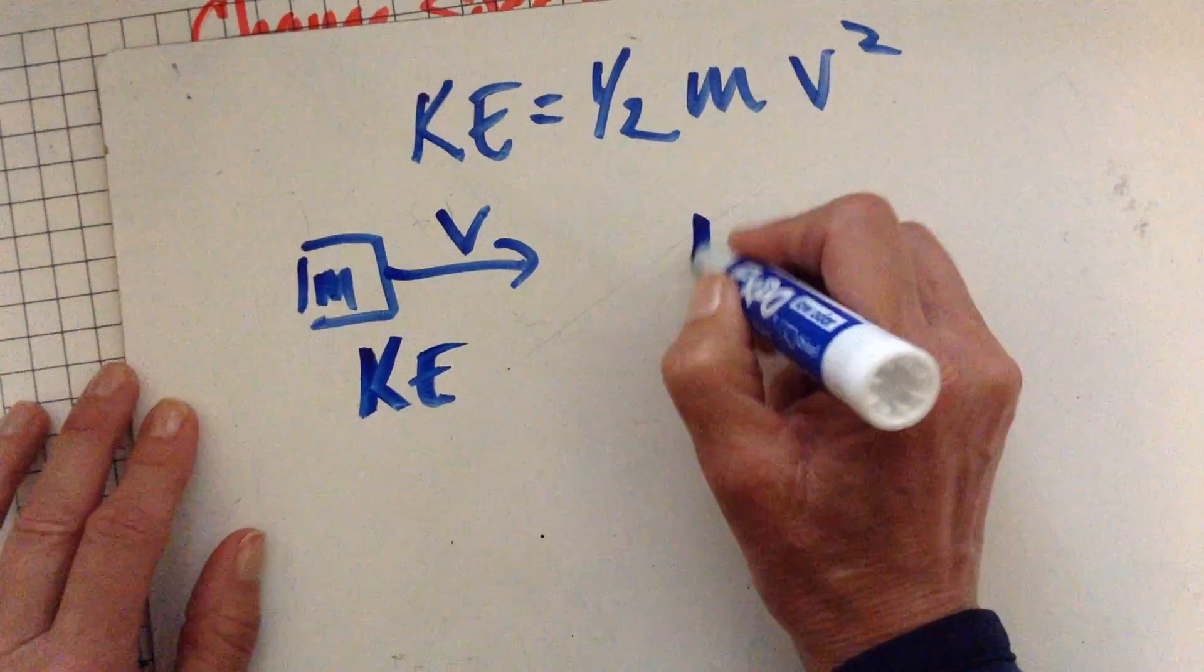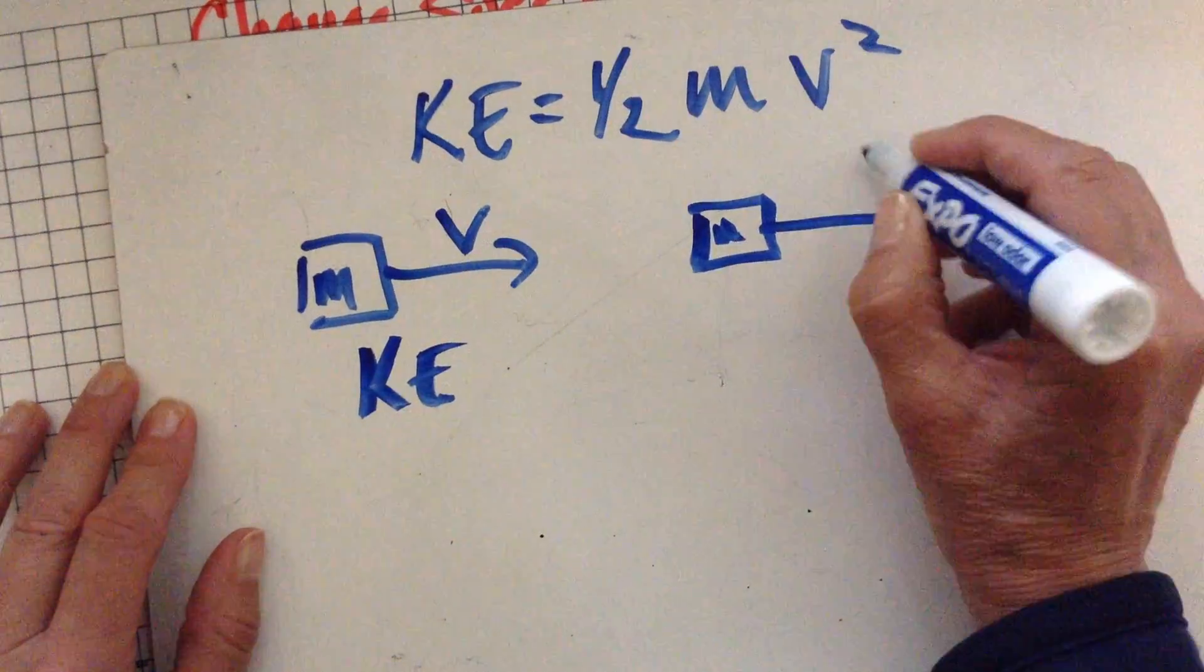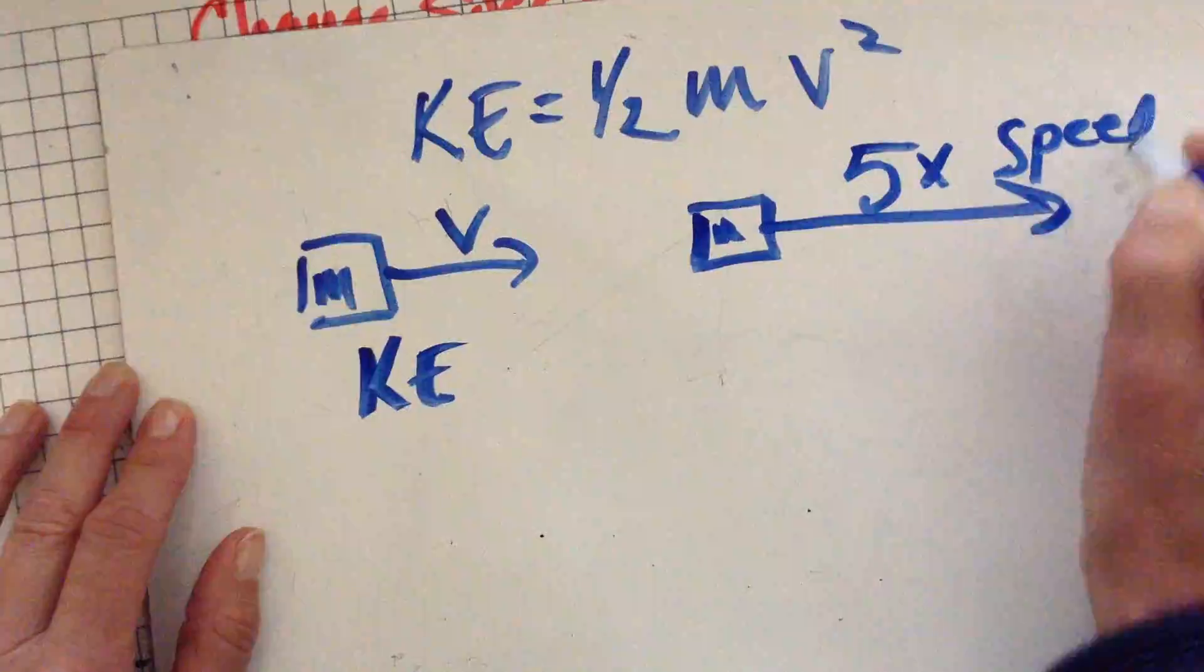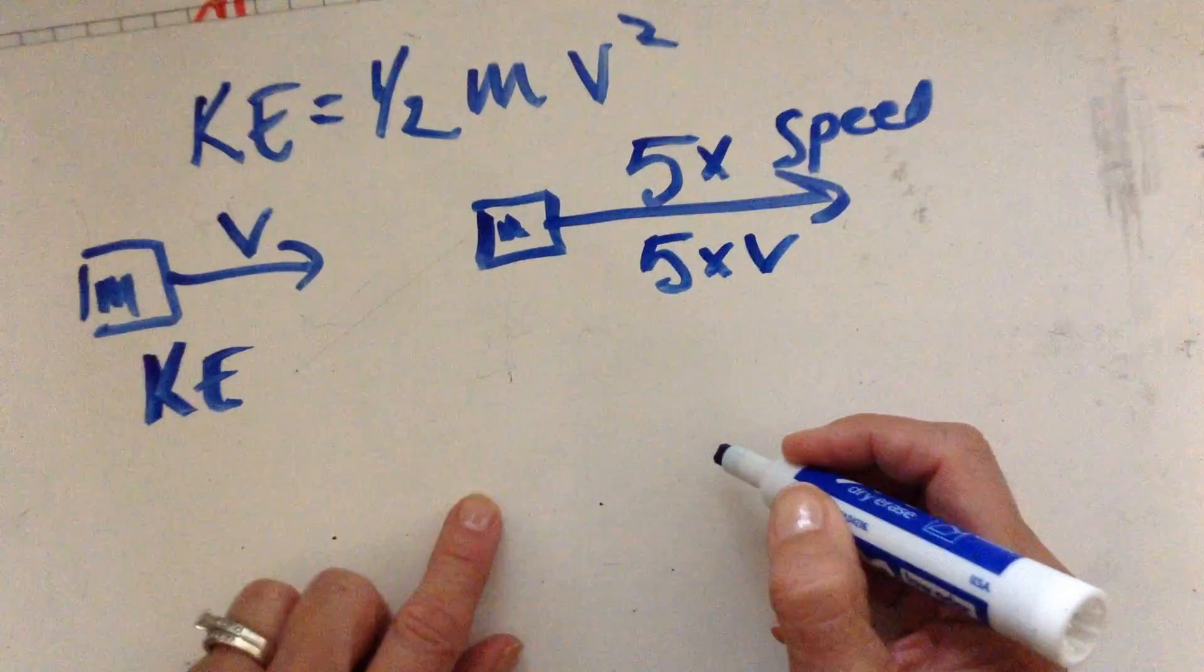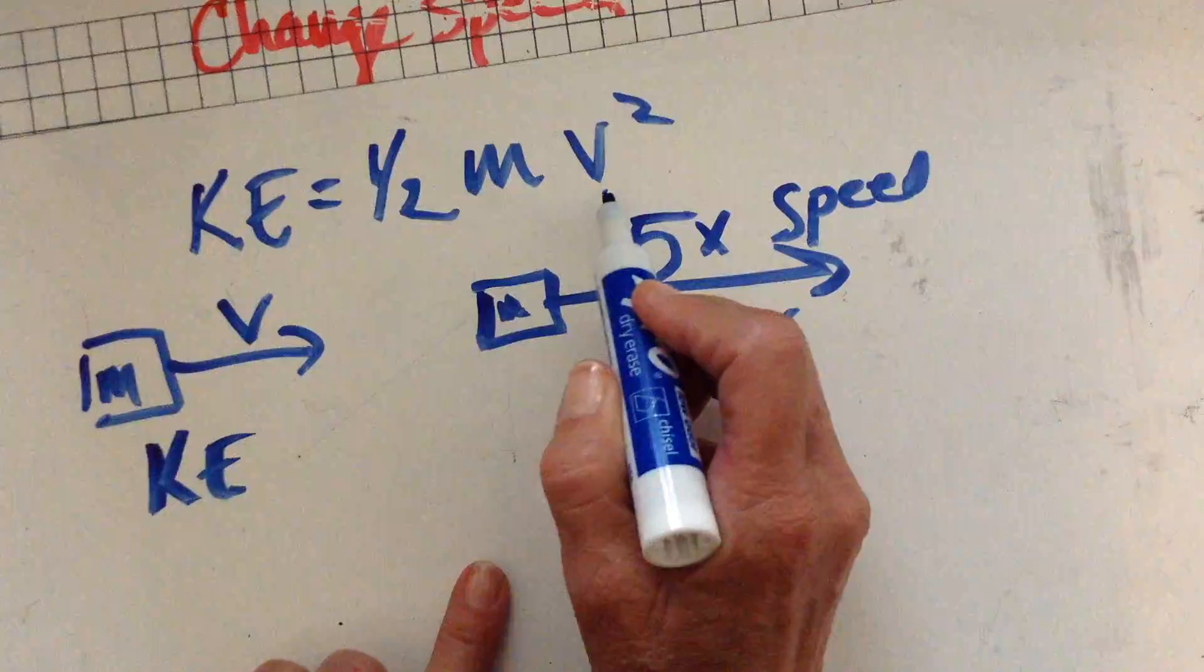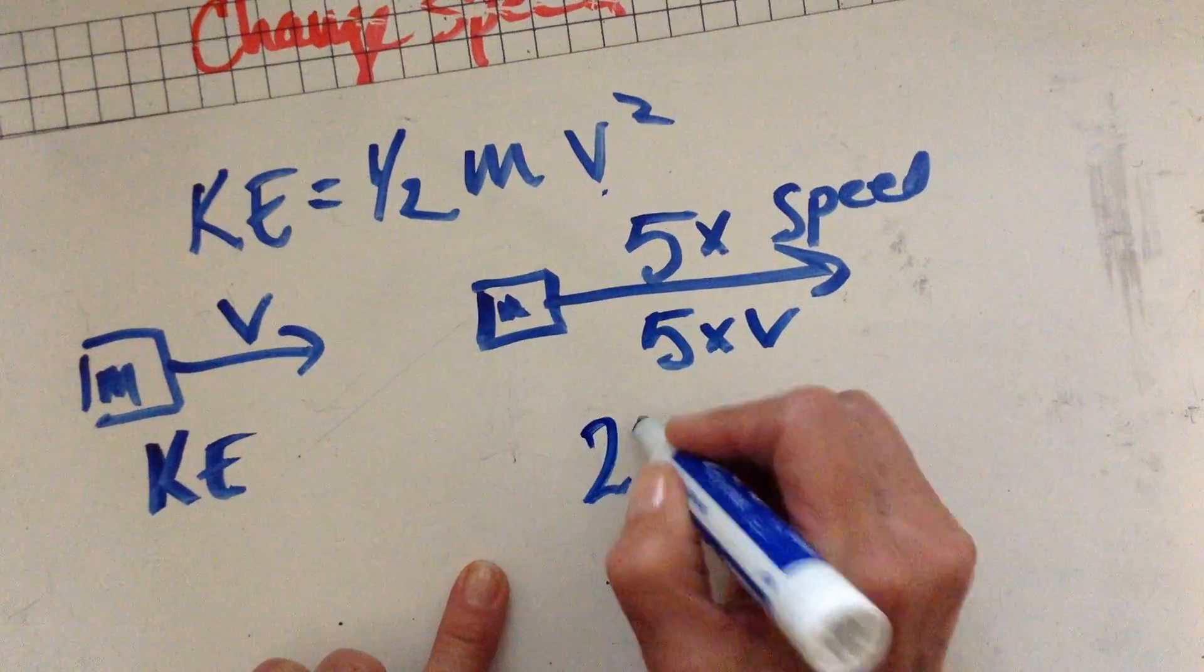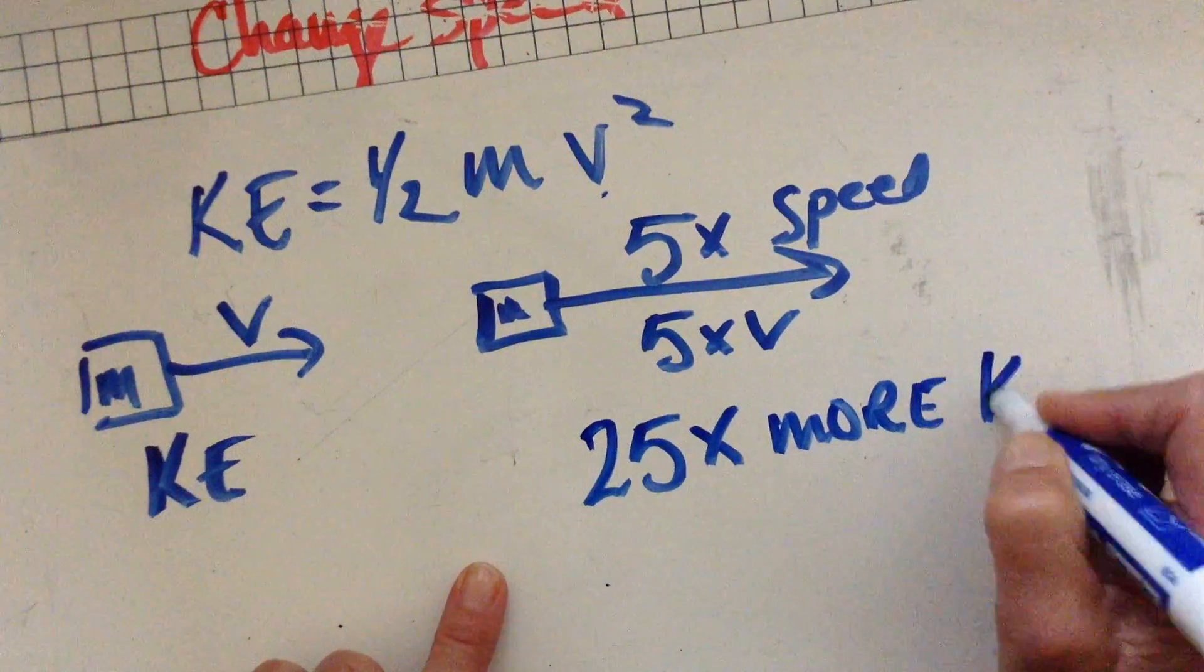But what if I take my mass, same mass, but now I have five times the speed, which means five times V. Well, what's going to happen to my kinetic energy? Well, if I put five times V in there and square it, that means I'm going to have a factor of 25 on this side. It means I'm going to have 25 times more kinetic energy.